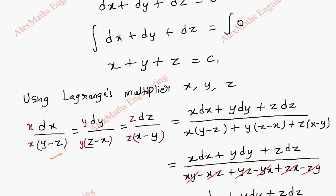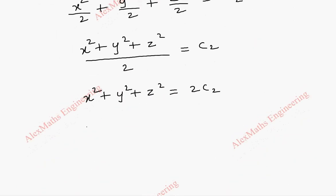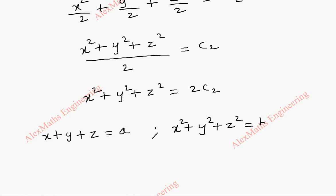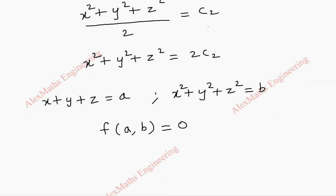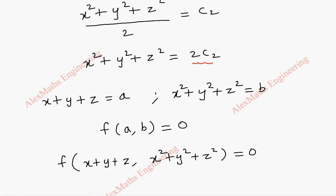So we already got c1, and let's take c1 as constant a, that is x plus y plus z equal to a. And this is another constant, x square plus y square plus z square equal to b, where we took 2c2 itself as b. The solution is in the form f of a comma b equal to 0. Substituting, this becomes f of x plus y plus z comma x square plus y square plus z square equal to 0. This is the required general solution.